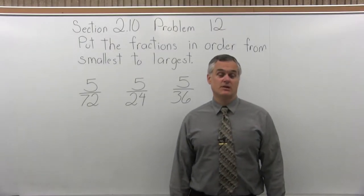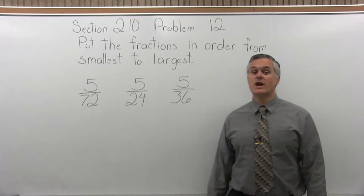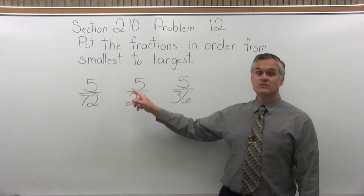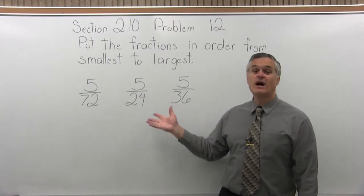This is Section 2.10, Problem 12. It says put the fractions in order from smallest to largest. And we have 5 over 72, 5 over 24, and 5 over 36.